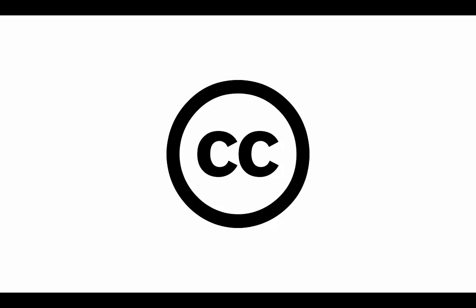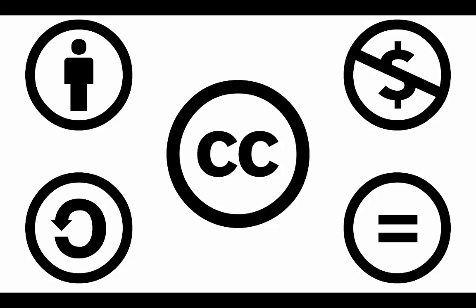Creative Commons licenses are made up of different combinations of four basic elements. Attribution is the first element on all Creative Commons licenses. This requires that anyone using your work gives you credit for it.